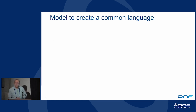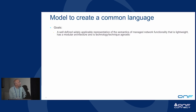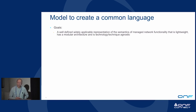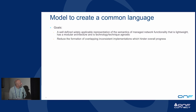Before getting into technical details, let's look at what we're trying to do. It's a common model — a well-defined, widely applicable representation of the semantics of managed networks — that allows us to project different networks in a very modular and consistent form. It's multi-layered, layer-agnostic, and a recursive model that can handle essentially any transport structure we've encountered. Another goal is to reduce the formation of inconsistent implementations that get in the way of making progress in the industry.